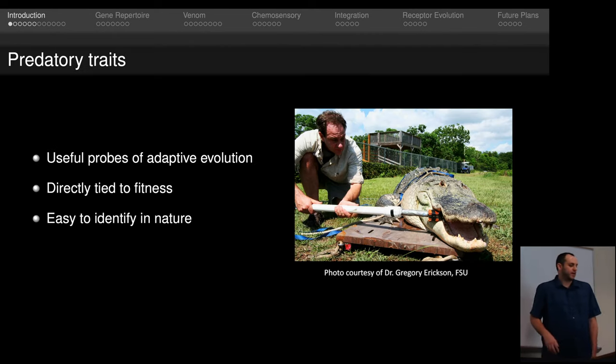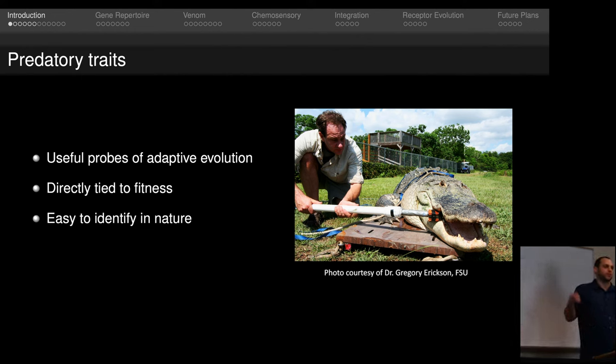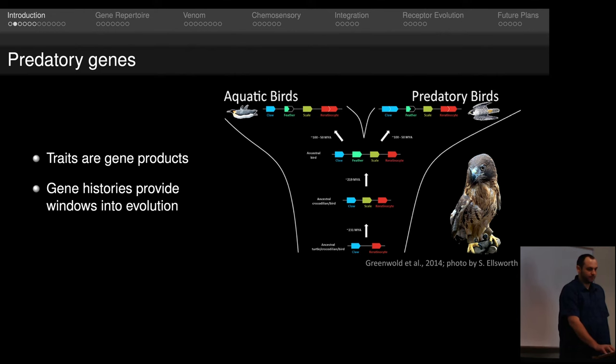Predatory traits are traits that allow one organism to eat another organism. These are really useful probes for adaptive evolution since they're directly tied to fitness, and typically they're pretty easy to identify in nature. All traits, including predatory traits, are to a large extent products of genes. And the histories of those genes can tell us a lot about how different traits evolved.